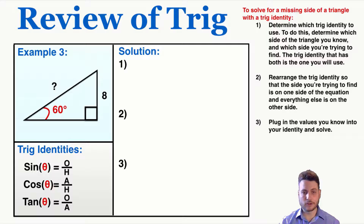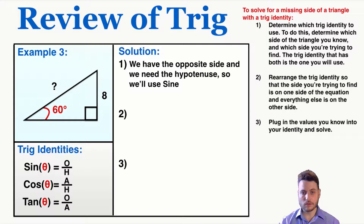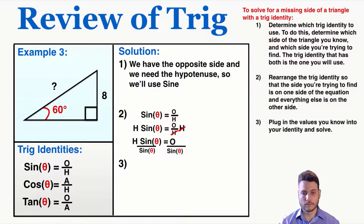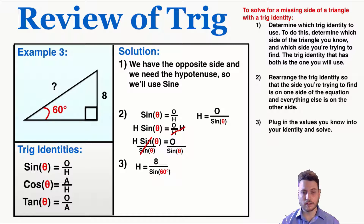Example 3: this time we're trying to find the hypotenuse and we have the opposite side. The only identity that connects those is sine. I rearrange for the hypotenuse to get it by itself, giving me: hypotenuse = opposite ÷ sine(θ). Plugging in my values: hypotenuse = 8 ÷ sine(60°), and according to my calculator that's 9.2 — so that's the value of the hypotenuse.